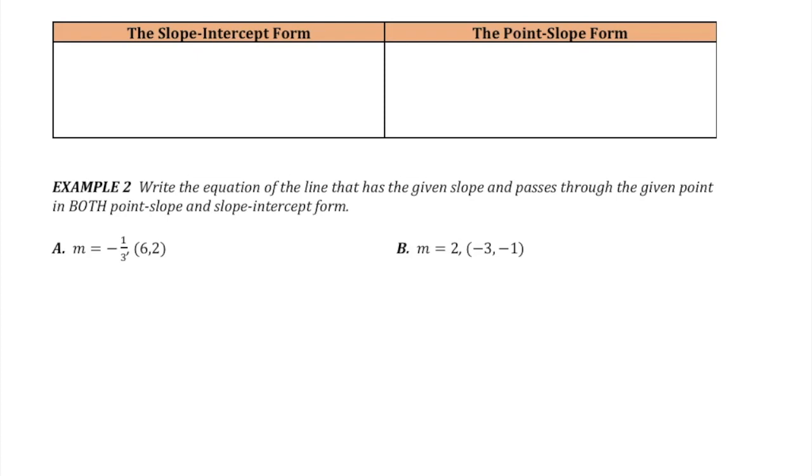We have the slope-intercept form of a line, y equals mx plus b. To use it, we need to know the slope and the y-intercept. And we have the point-slope form, which is y minus y1 equals m times x minus x1, where you need to know the coordinates of a point, x1, y1, and the slope. So now we'll do some examples.